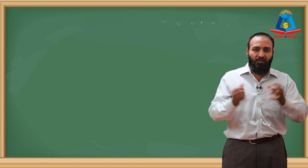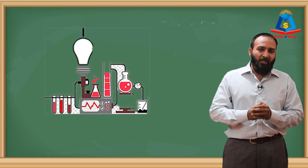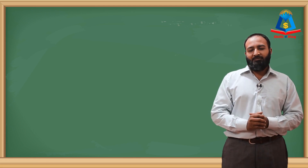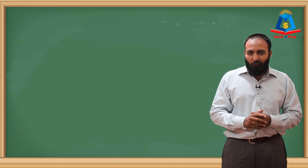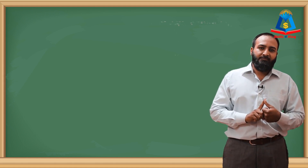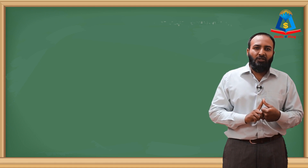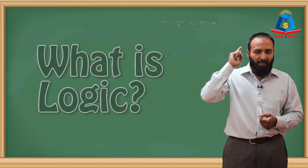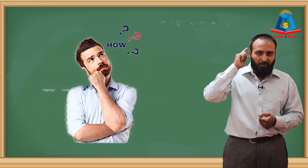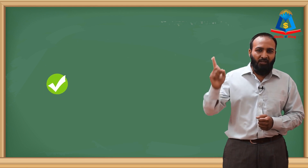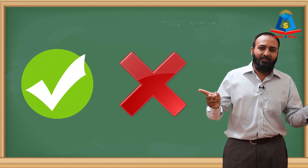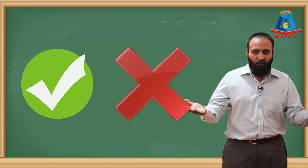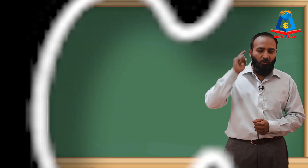Now that we have made observations, the next step is experiment. We use those observations to conduct experiments. When we do an experiment, it produces a result. That result is based on the principles of logic. What is logic? Logic is the knowledge by which we use our mind and intellect to differentiate between right and wrong. This knowledge is called logic.